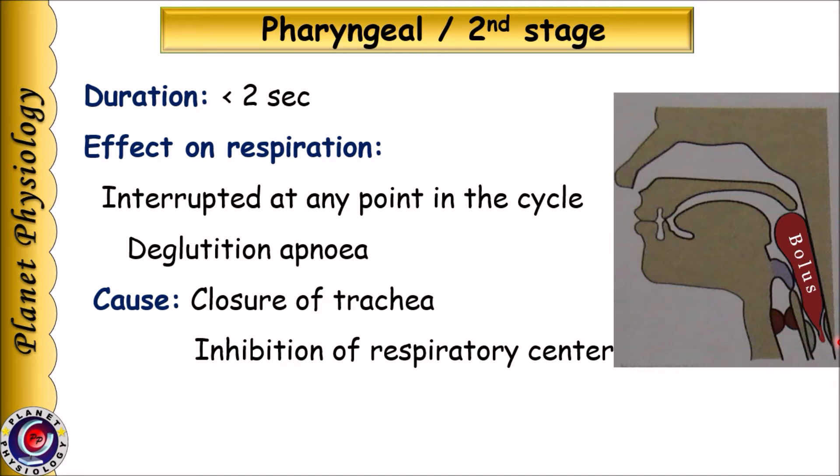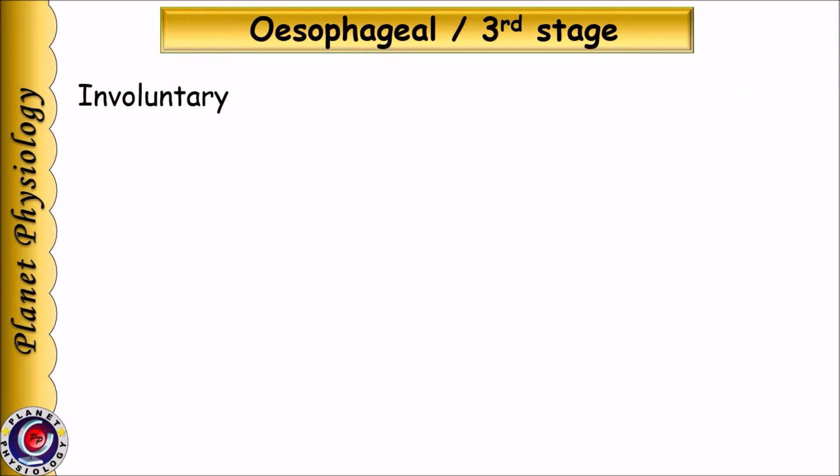There are two reasons for deglutational apnea: first is the closure of trachea by the epiglottis, and second is that the deglutational centre inhibits the respiratory centre. This ensures that bolus does not enter the respiratory tract. Now coming to the third stage of deglutation — the esophageal stage.